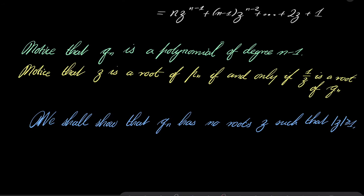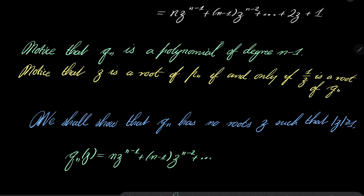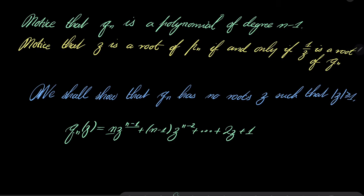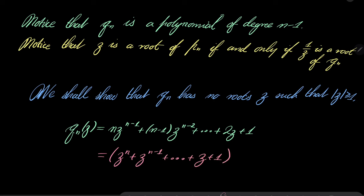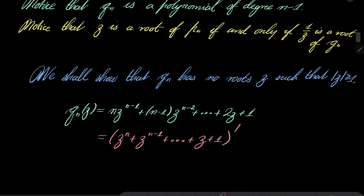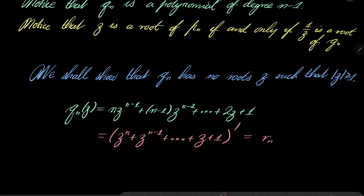Now the crucial observation: let's rewrite q_n(z) = n·z^(n-1) + (n-1)·z^(n-2) + ... + 2z + 1. Notice the coefficients n, n-1, n-2, ..., 2, 1 — this should ring a bell. Namely, this is the derivative of r_n(z) = z^n + z^(n-1) + ... + z + 1. So q_n = r_n'.